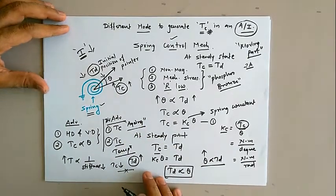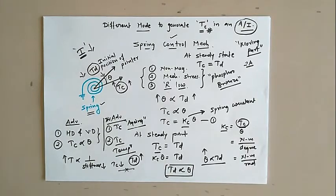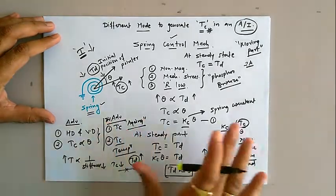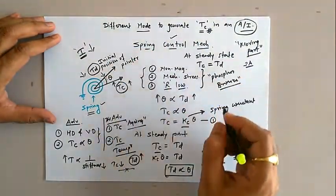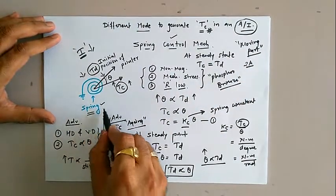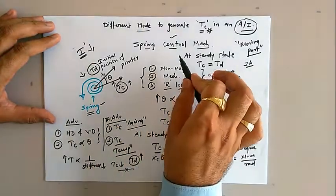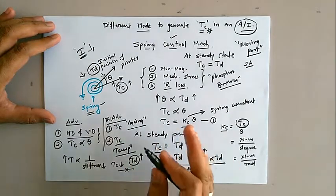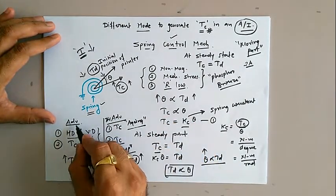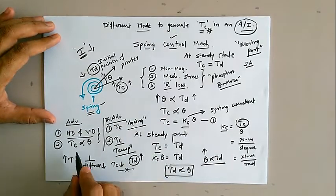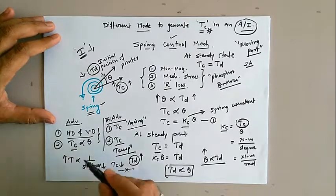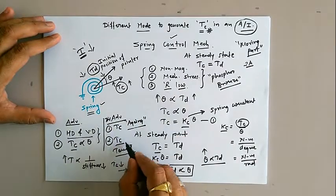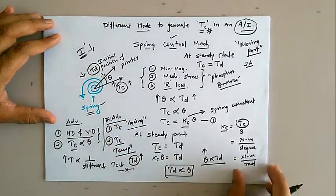To overcome that problem we need to go for gravity control mechanism. Let us summarize spring control: the controlling torque is produced using a spring arrangement. Advantages are it can be used in any position — horizontal or vertical dial setting — and the controlling torque varies linearly with deflection angle theta. Disadvantages are it is affected by aging and by temperature.